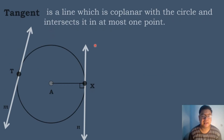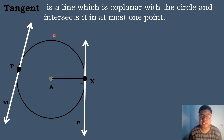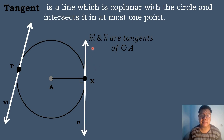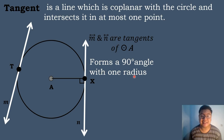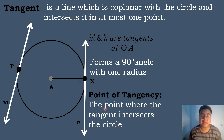Let's have first the tangent line. When we say tangent, it is a line which is coplanar with the circle and intersects it at most one point. In this figure, circle A has two tangents, which are line M and line N. Tangent forms a 90-degree or right angle with one of the radii — meaning, radius AX is perpendicular to tangent N. The point of tangency is the point where the tangent intersects the circle. In this case, the points of tangency in circle A are point X and point T.